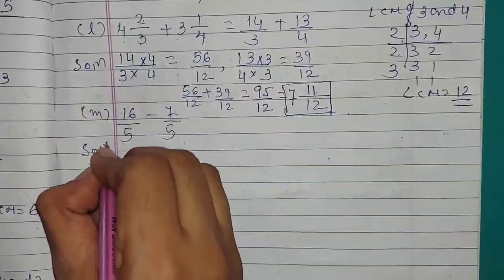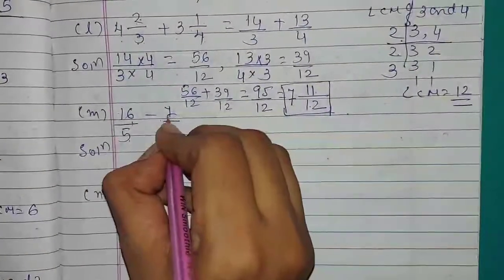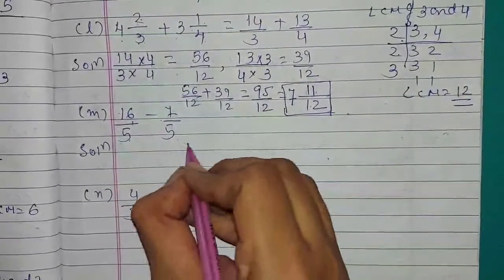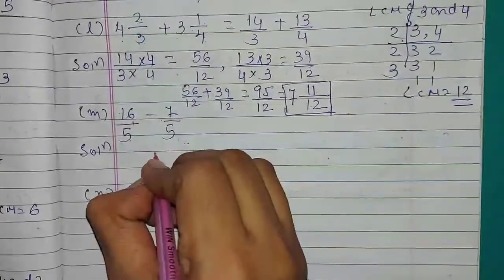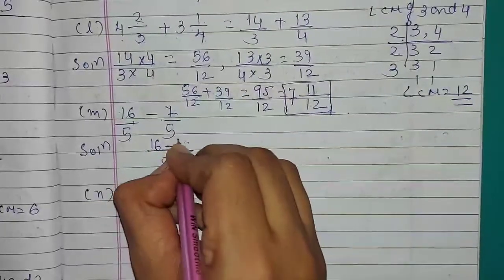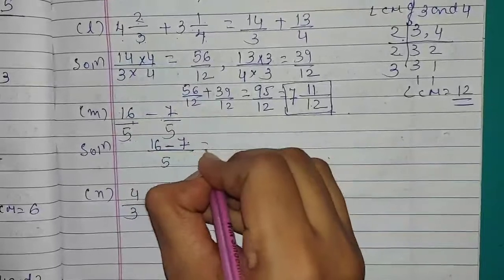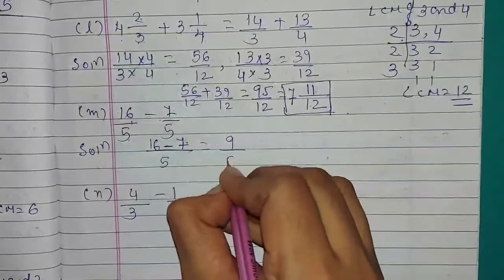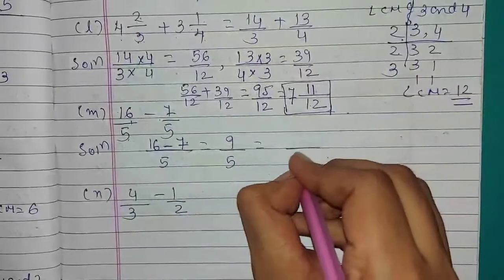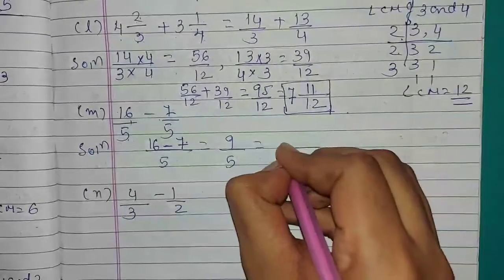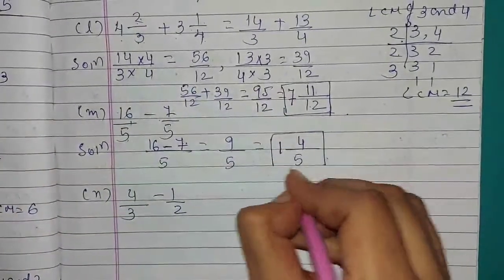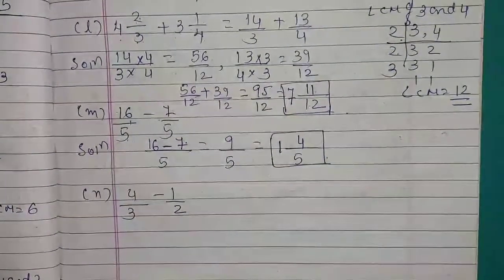Number M: 16 upon 5 minus 7 upon 5. Both are like fractions. 16 minus 7 is 9 upon 5. This is improper fraction, so we convert to mixed number: 1 integer 4 upon 5 is the answer.